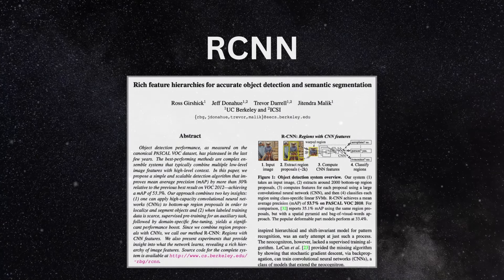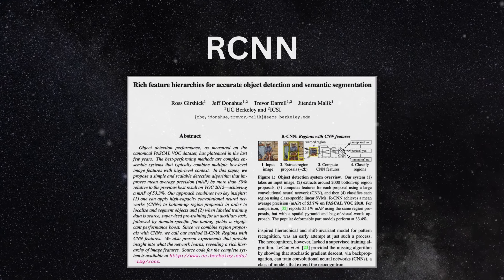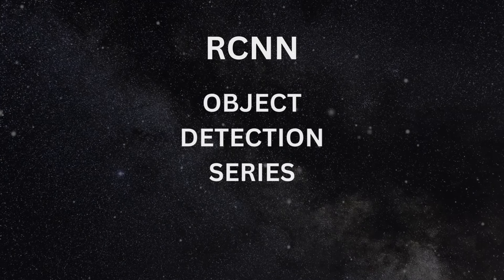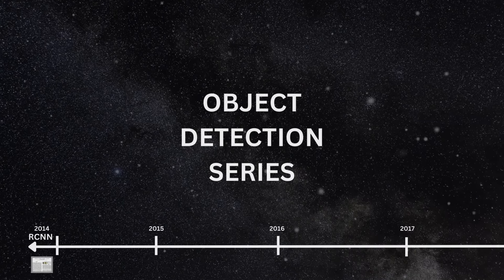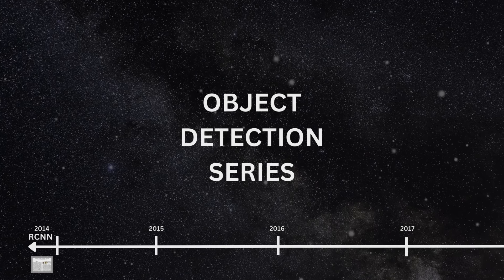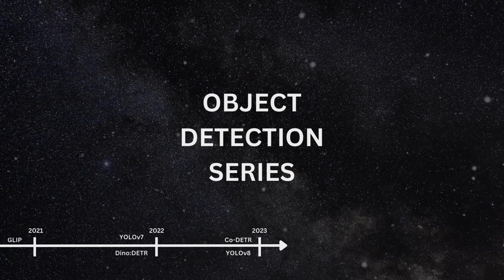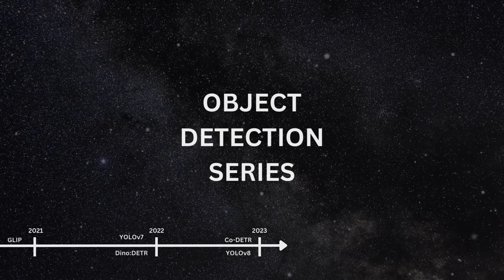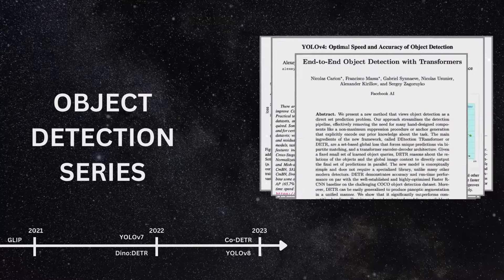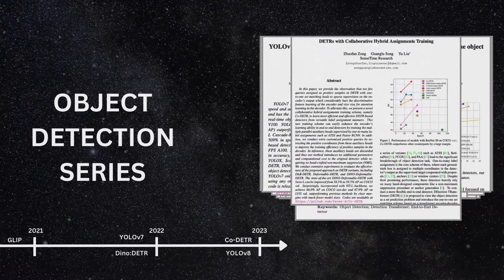In this video, we'll look into RCNN, which is short for Regions with CNN Features. This will be the first video in the object detection series. The plan for this series will be to go through all the seminal works in object detection in the past decade, all the way from RCNN to YOLO V8. For all of them, we'll try to understand every detail of the method, and for some of them, we'll also follow up with an implementation from scratch.